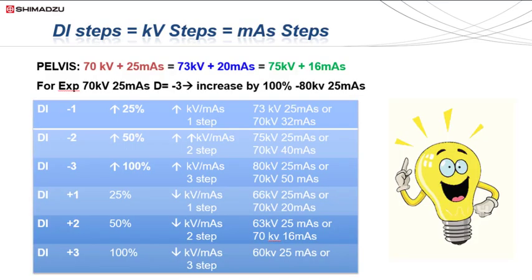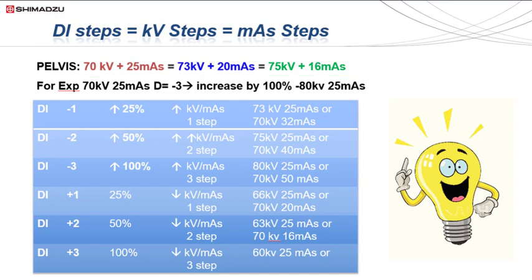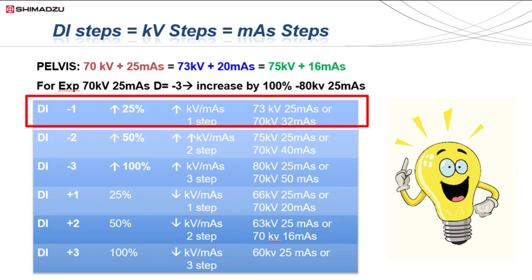To explain how to use these DI values and make them a functional tool, let's take a pelvic x-ray exposure as an example. We know that an exposure of 70 KV and 25 MAS is equivalent to 73 KV and 20 MAS, and is also equivalent to 75 KV and 16 MAS — for every step up in KV we make, we step the MAS conversely down. To increase or decrease the amount of exposure while keeping one factor constant: if we keep MAS constant and increase KV by 3 up to 73 KV, this is considered one step, or increasing the exposure by 25%, which is also equivalent to increasing the DI by 1.